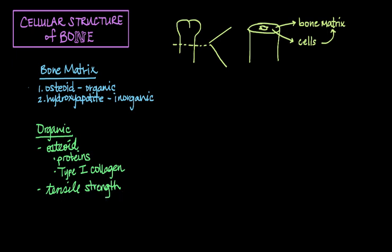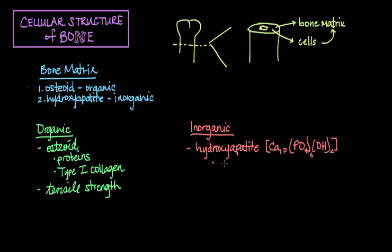Now for the inorganic portion of bone. The inorganic portion is made up of hydroxyapatite. Its chemical formula is calcium, phosphate, and water [Ca₁₀(PO₄)₆(OH)₂]. Basically, hydroxyapatite is calcium phosphate crystals. These calcium phosphate crystals are the mineral portion of bone that gives bone its rigid strength and density.